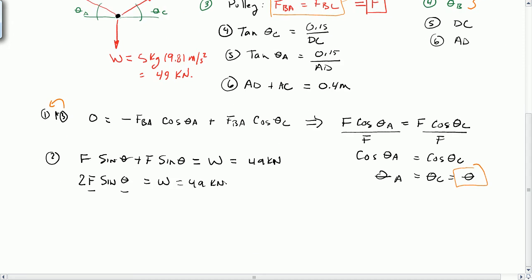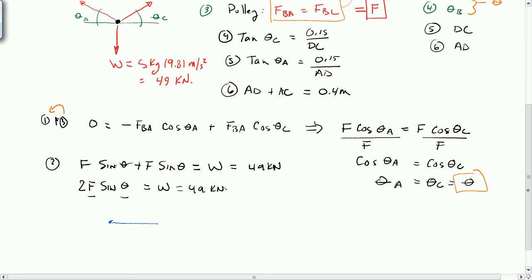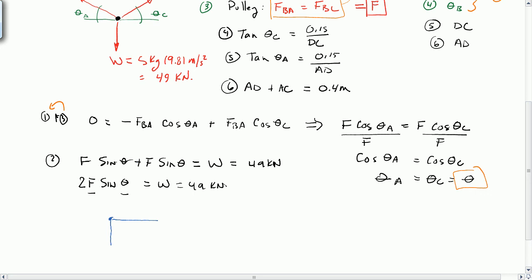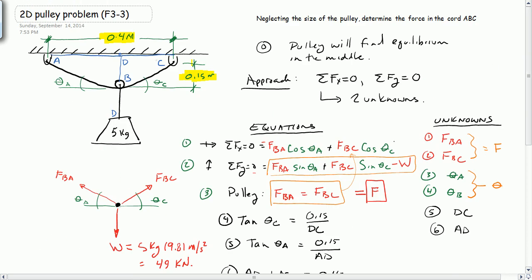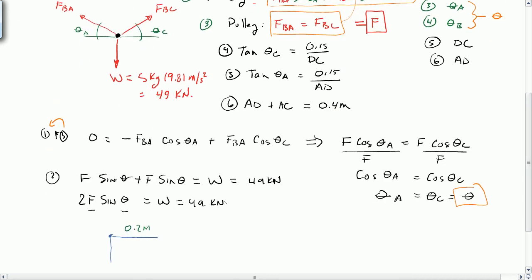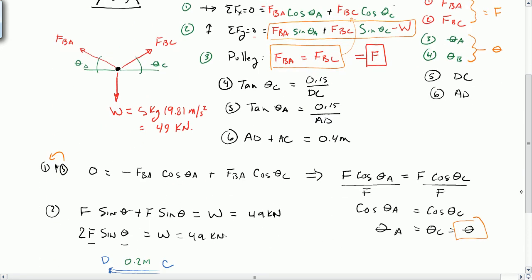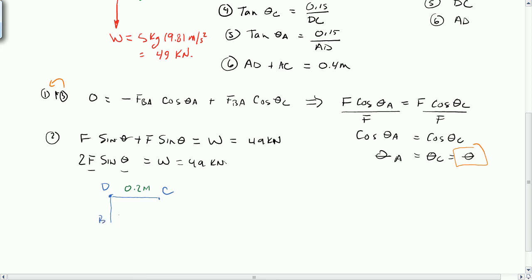our geometry, because we found theta C and theta A were the same, point D is exactly 0.2 meters. It's halfway. If those are the same angles, if these two are the same angles, then D is halfway. So 0.2 meters from point C. Our point B down here is there. This is 0.15, and this is our angle theta.